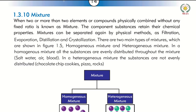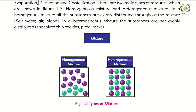A mixture is formed when two or more compounds are physically combined. The components are not in a fixed ratio. The mixture has two types: homogeneous, which has uniformity throughout and is called a solution.